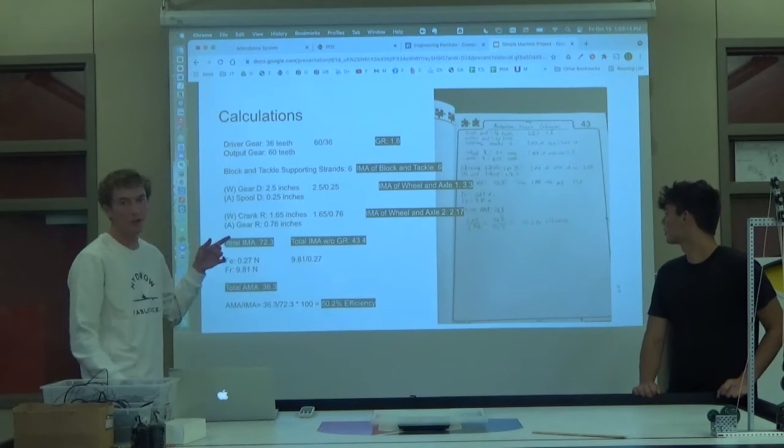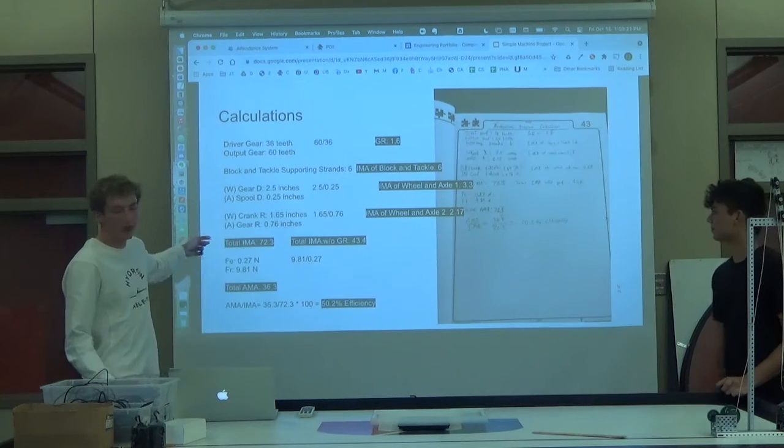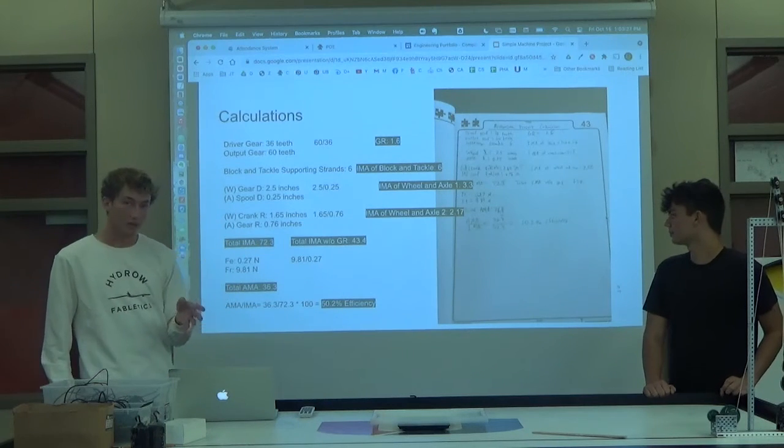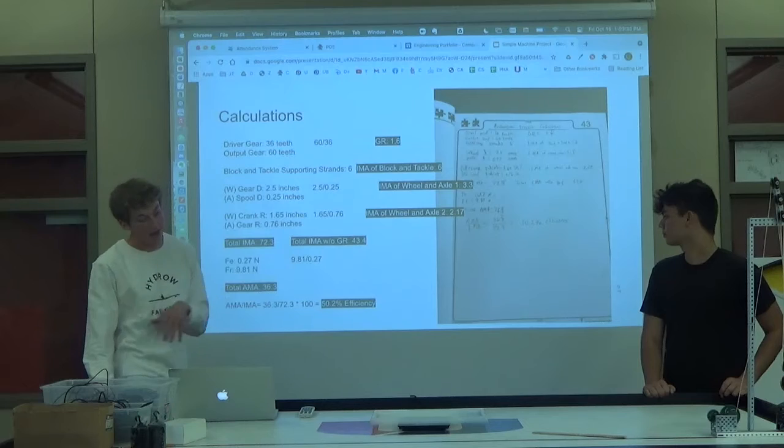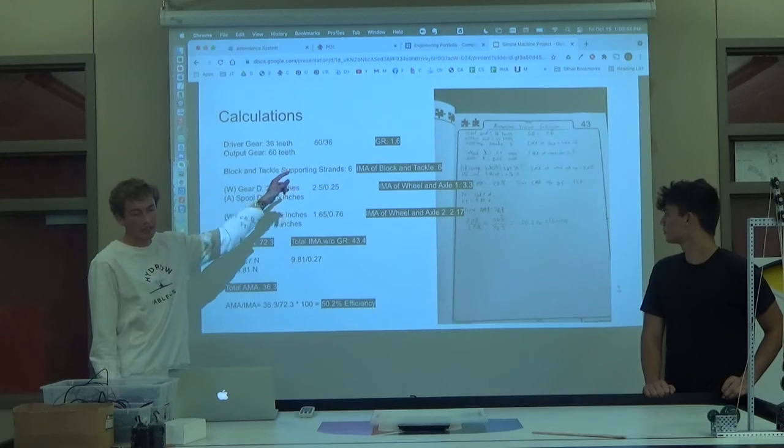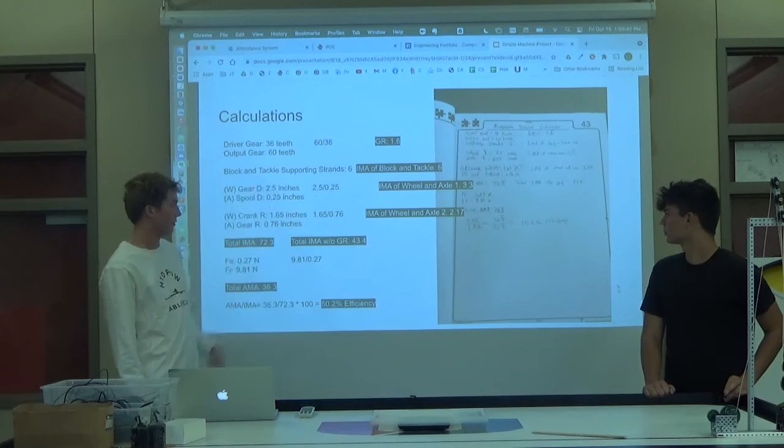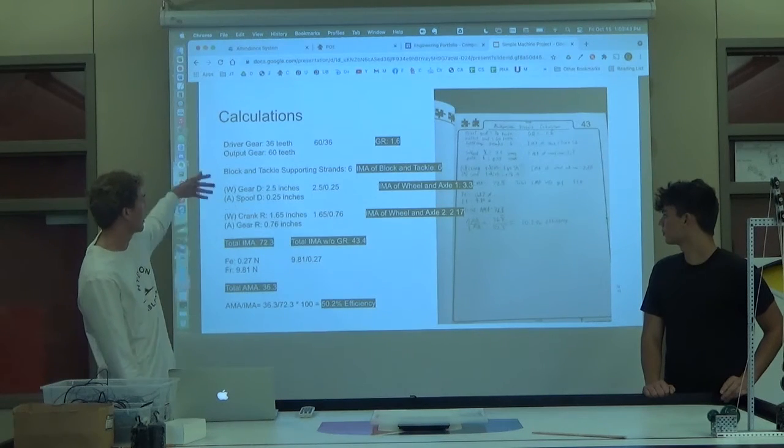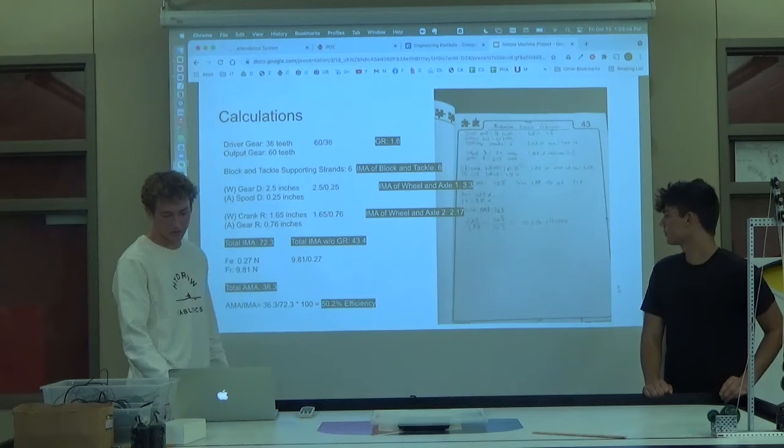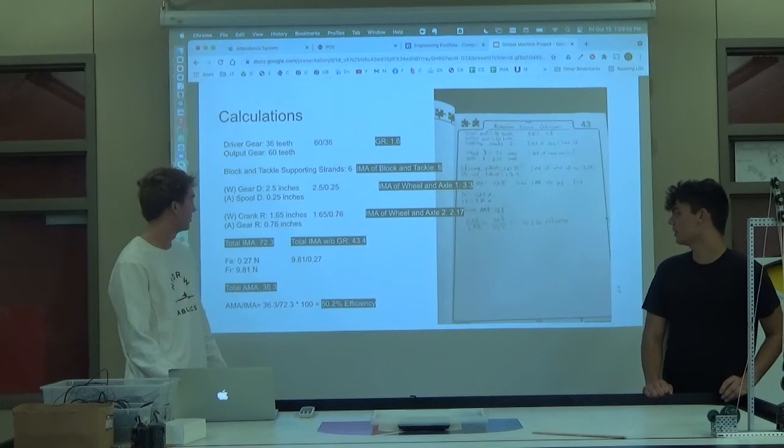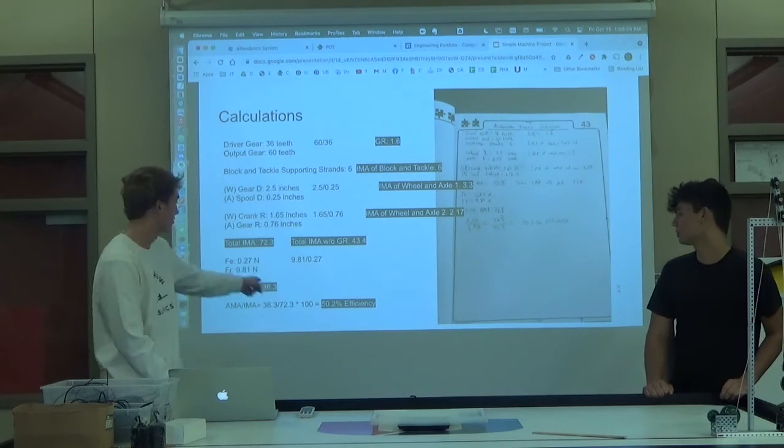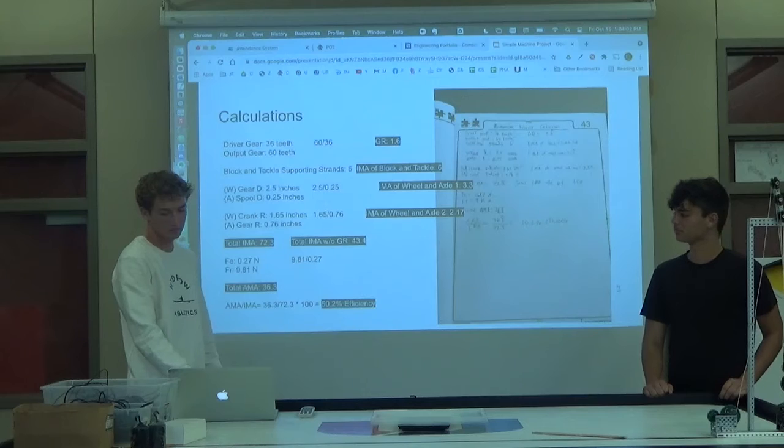Here are the calculations. So our total IMA was 72.3. Our total IMA without the gear ratio was 43.4. Our total AMA was 36.3. We took the AMA, divided it by the IMA, and we got our efficiency, which was a little over 50%. Our gear ratio was 1.6. And then we kind of went over it before, but our IMA, the block-and-tackle, was 6. And just some other calculations of the IMA, the wheel and axle, and other things. So 50.2% efficiency. And then it weighed 0.768 kilograms. What was the efficiency? 50.2. Oh, okay.